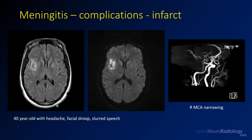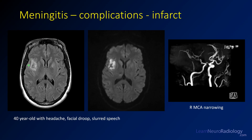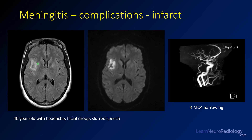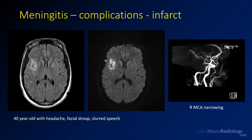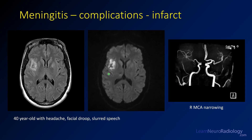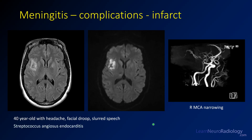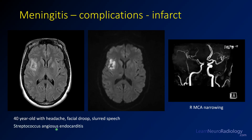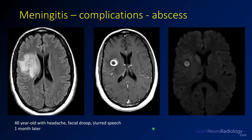Meningitis can produce complications. This example shows abnormal FLAIR in the insula and peri-insular white matter; on diffusion it is hyperintense, compatible with an infarct. On MRA, there is a paucity of vessels in the MCA distribution and areas of vascular narrowing due to irritation from material in the meninges. This patient had Streptococcus anginosus endocarditis with vascular occlusions in the setting of meningitis. One month later, a rim-enhancing collection developed with central diffusion hyperintensity — an abscess formed from septic emboli.